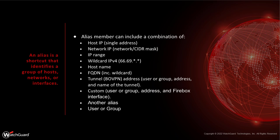An alias can also include a single IP address, a network range, CIDR mask, subnet, wildcard addresses, specific hostnames, fully qualified domain names including wildcards, BOVPN addresses, or the tunnel name itself. You can create custom aliases and nest aliases within each other — doing a group-of-groups type of thing, such as an 'all internal users' alias combining multiple groups and subnets.